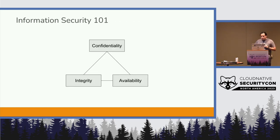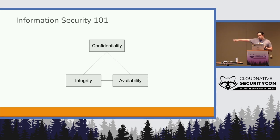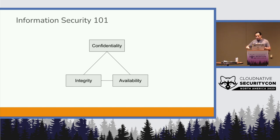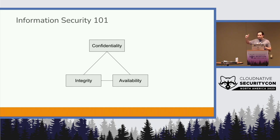Information security 101: confidentiality, integrity, and availability — CIA. Confidentiality: you want to keep your secrets secret. Integrity: you want to make sure your data remains untampered with. Availability: you can access it when you want. If you have trouble remembering it, just remember CIA.